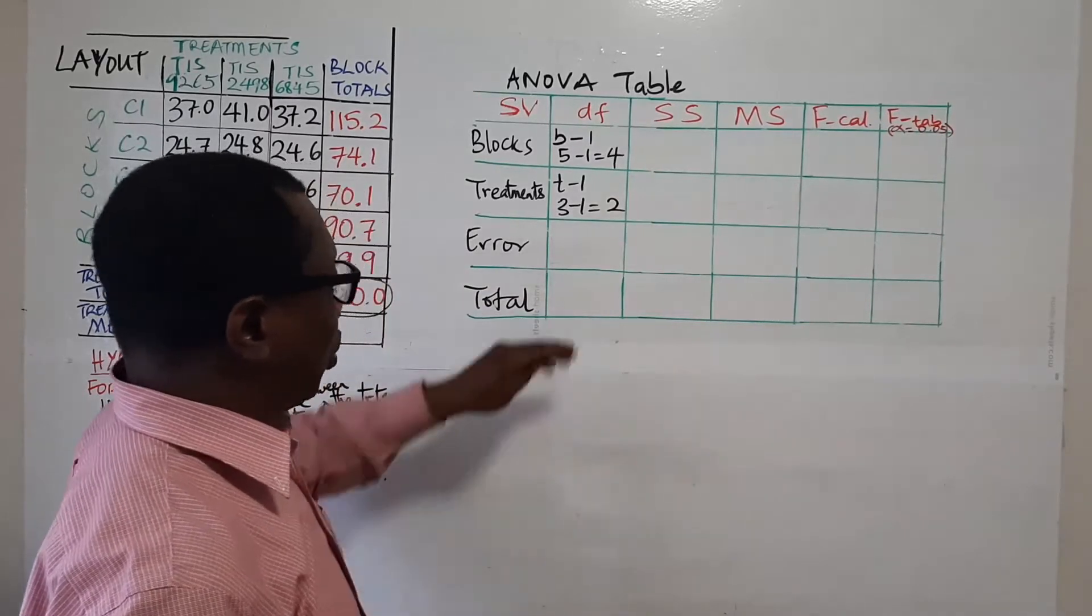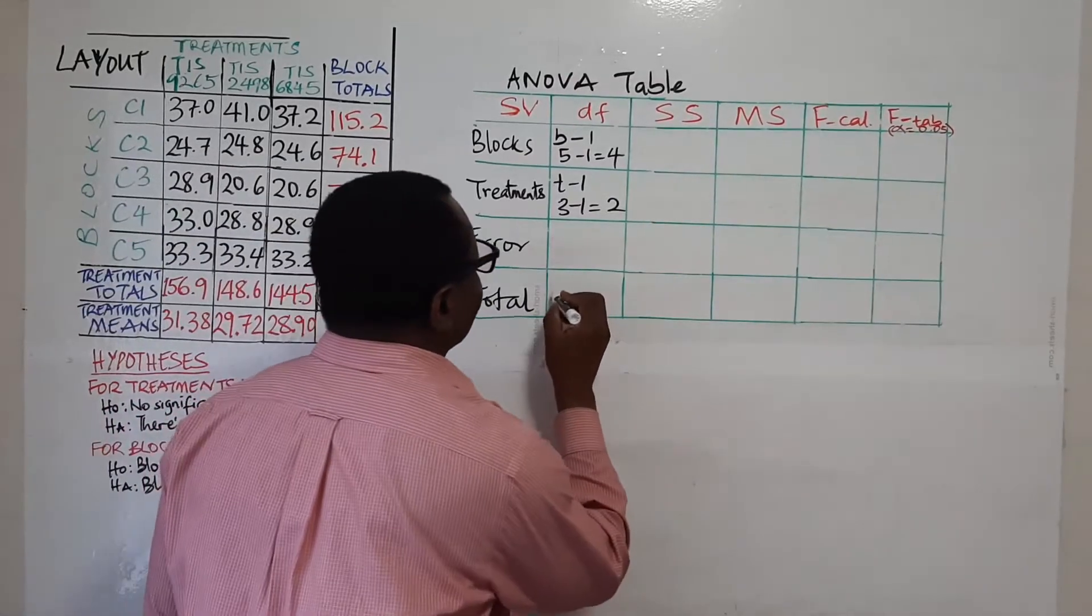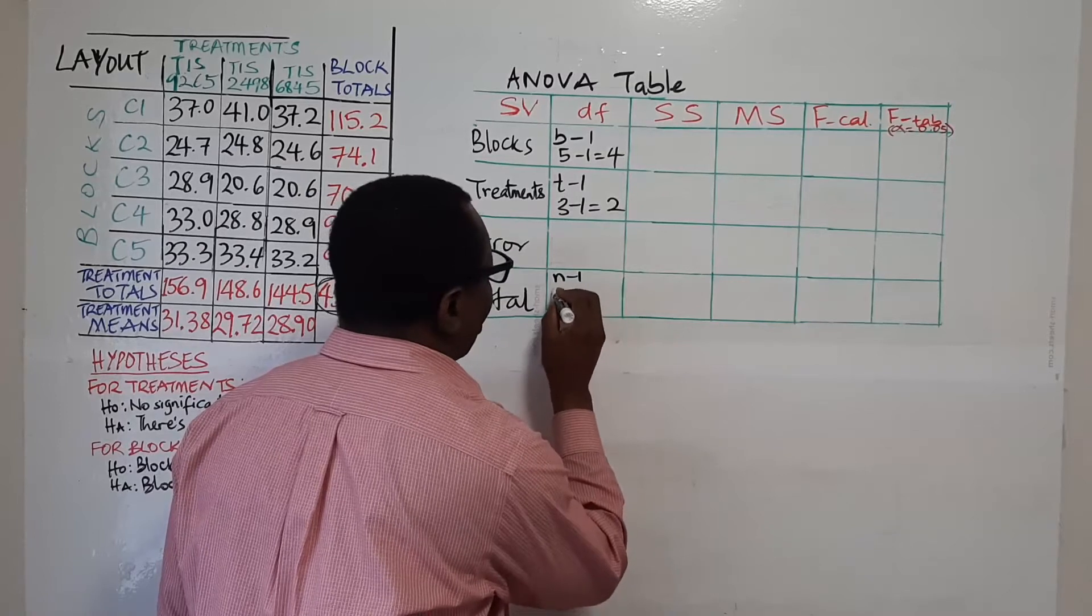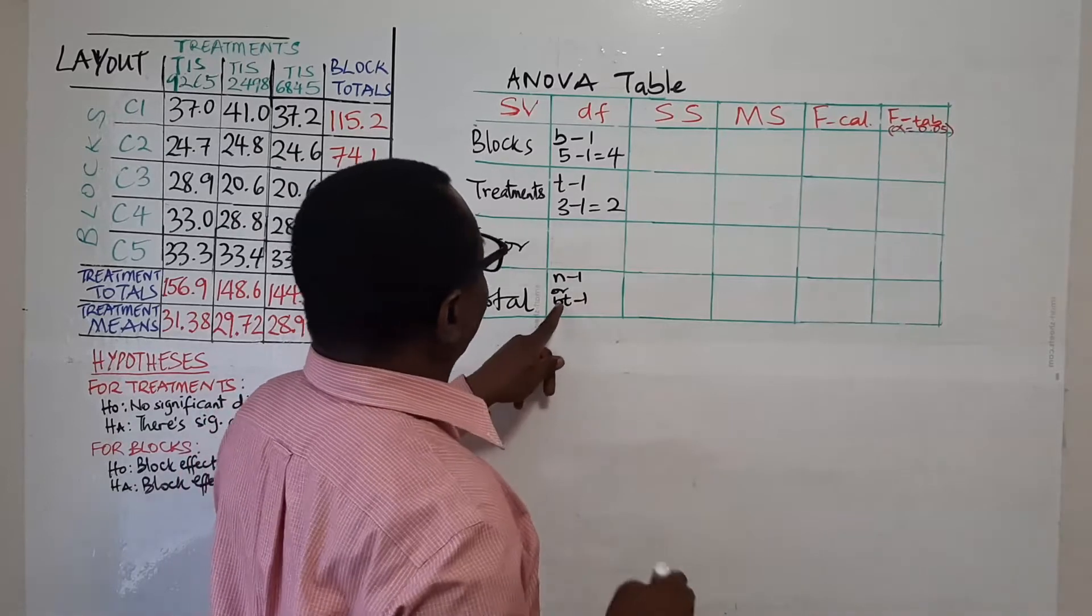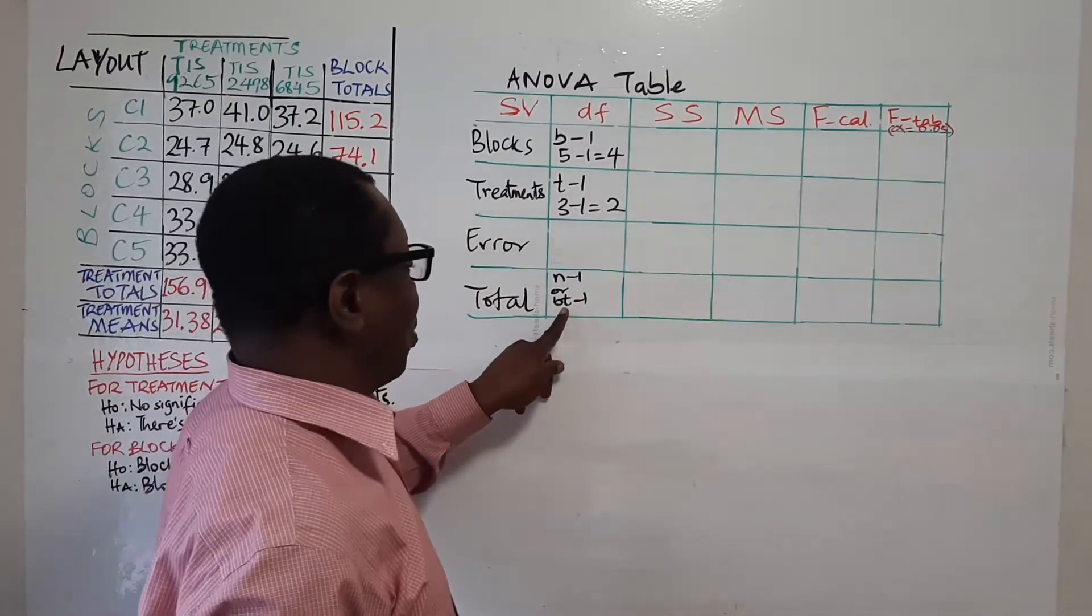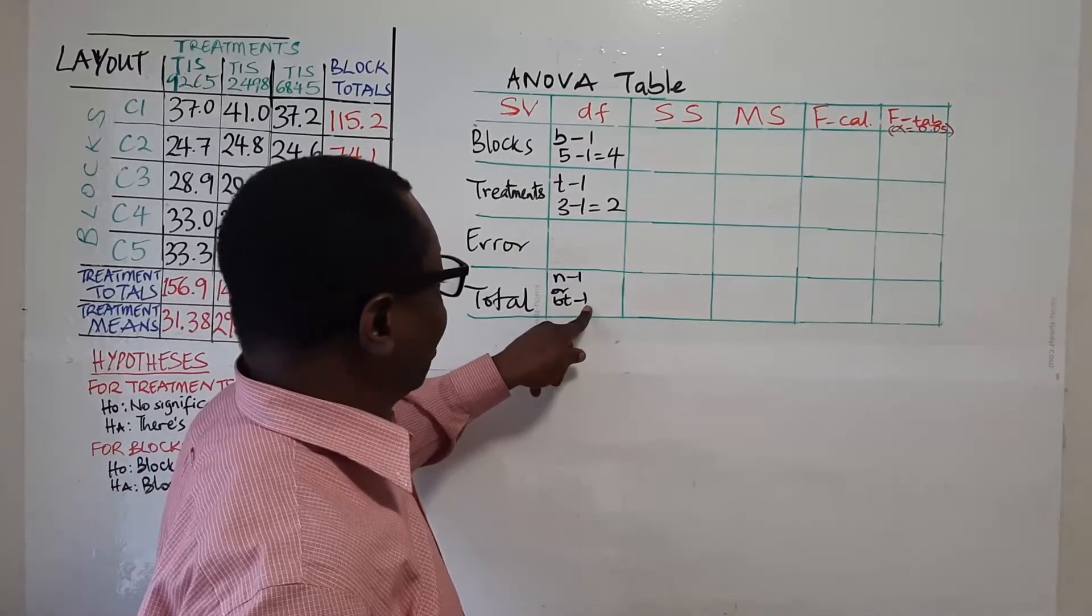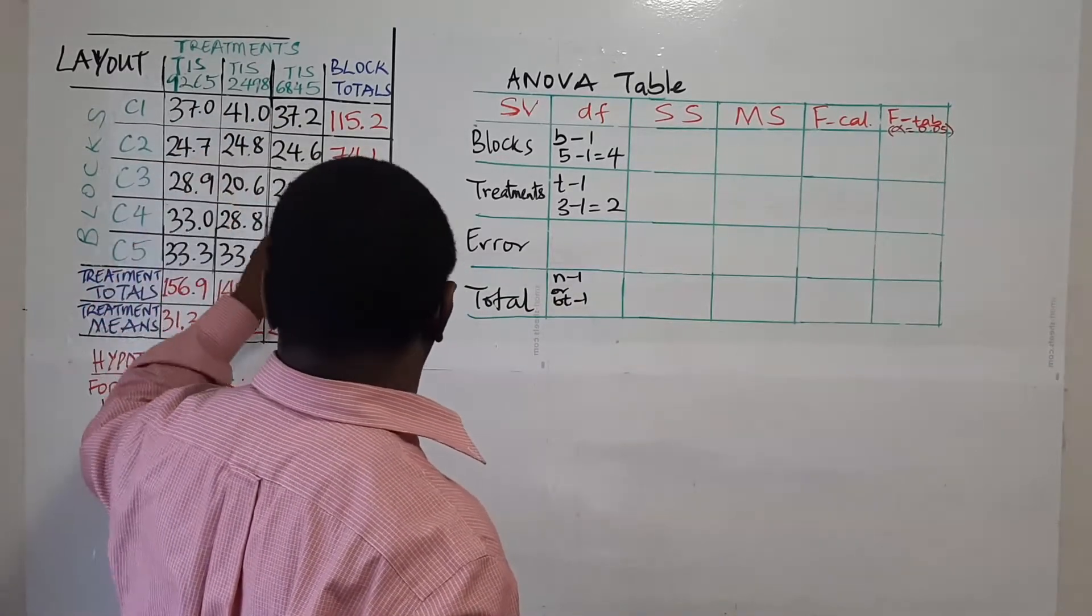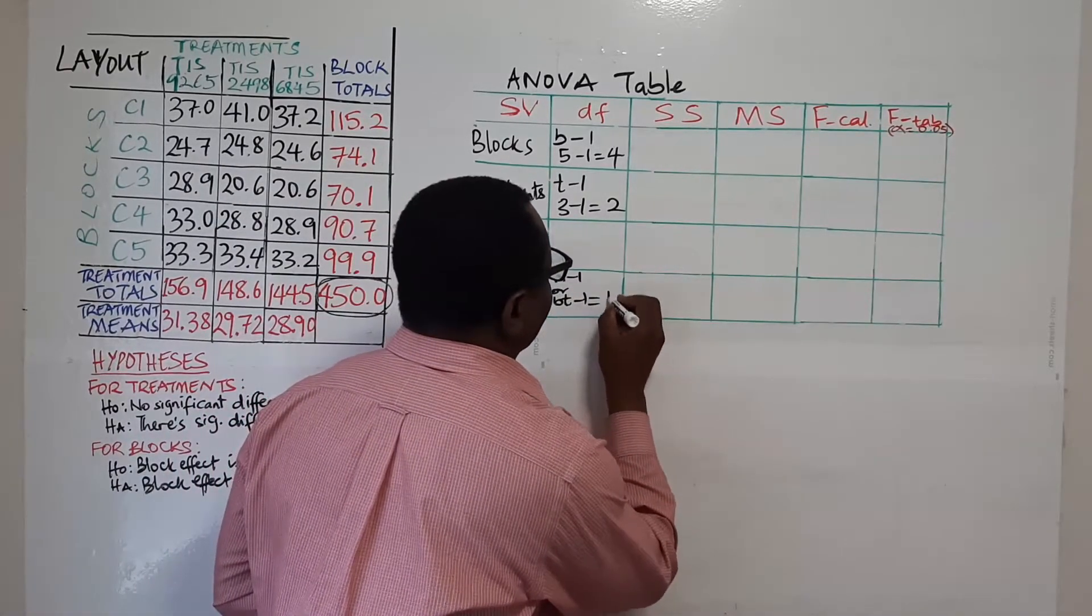For error we leave that, then we'll do total first. Total is either n minus one or you say bt minus one. What is b? What is t? B is number of blocks, t is number of treatments and that's five times three, that's fifteen. So fifteen is the total number of observations. If you count the individual observations they all add up to fifteen. So subtract one from there, it will give you fourteen.